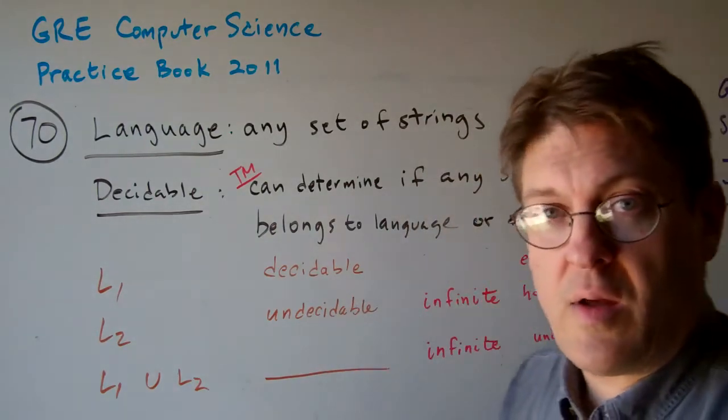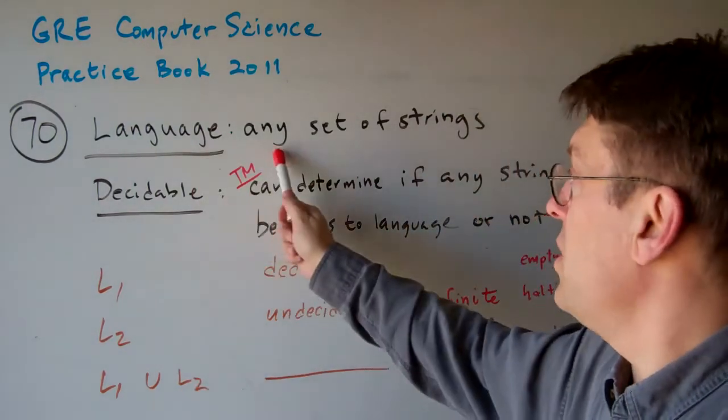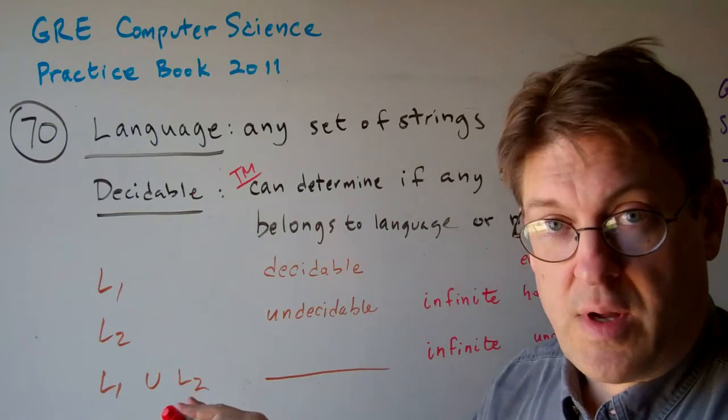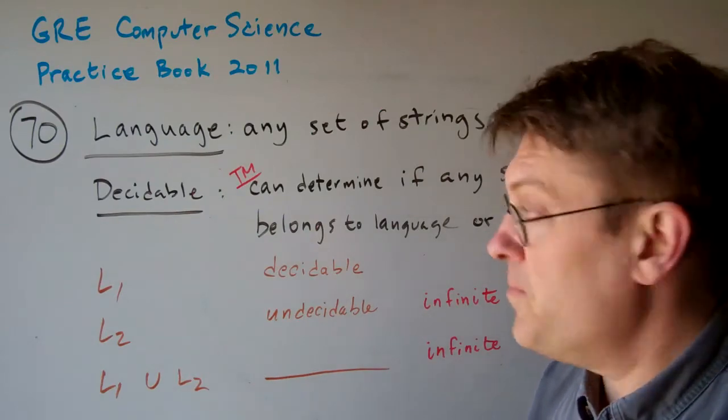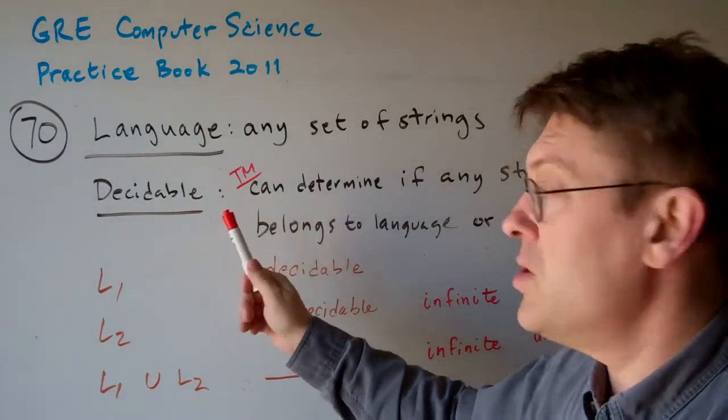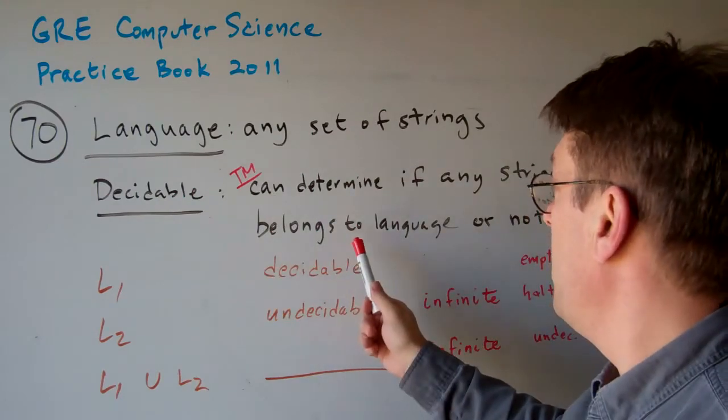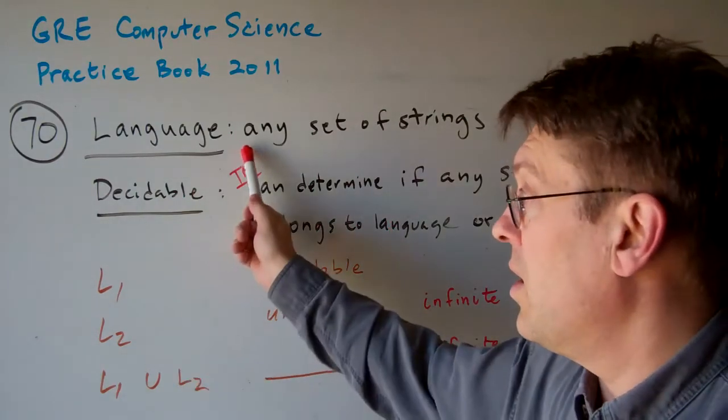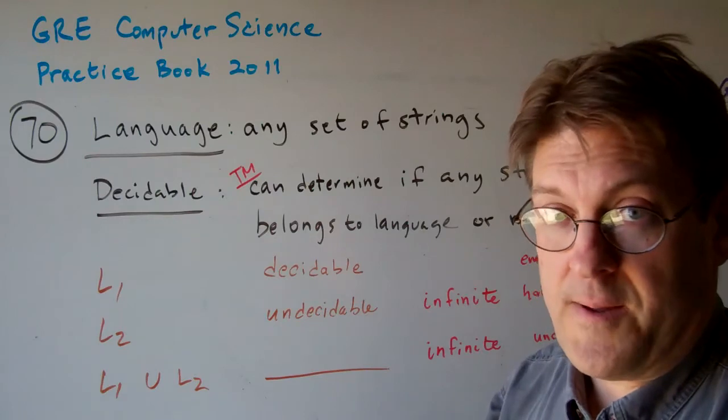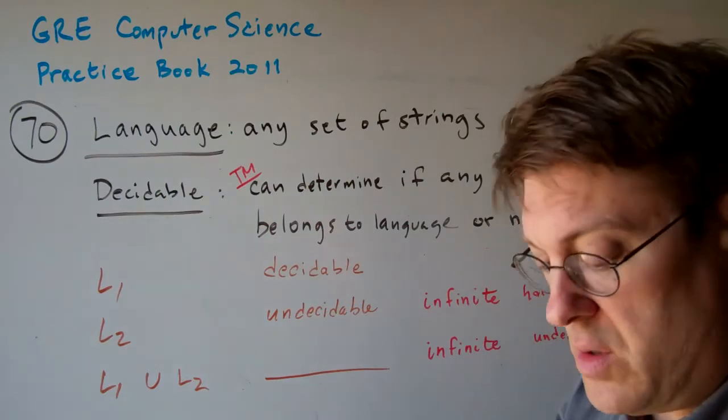So here's the question. Here's what we've got to know. A language is any set of strings. Hopefully we know that already. Decidable means that a Turing machine can determine if any string belongs to the language or not. Let's be clear on those two terms before we start.